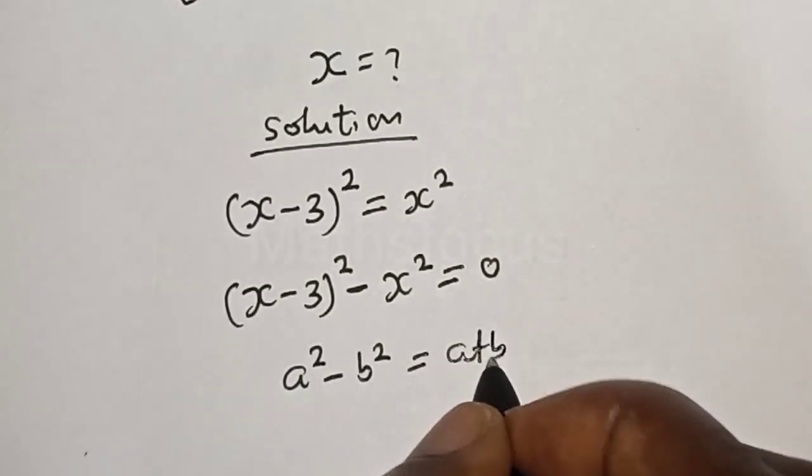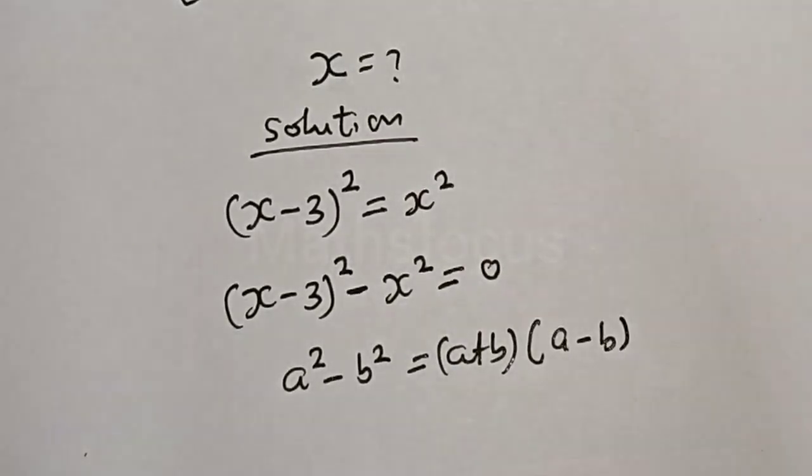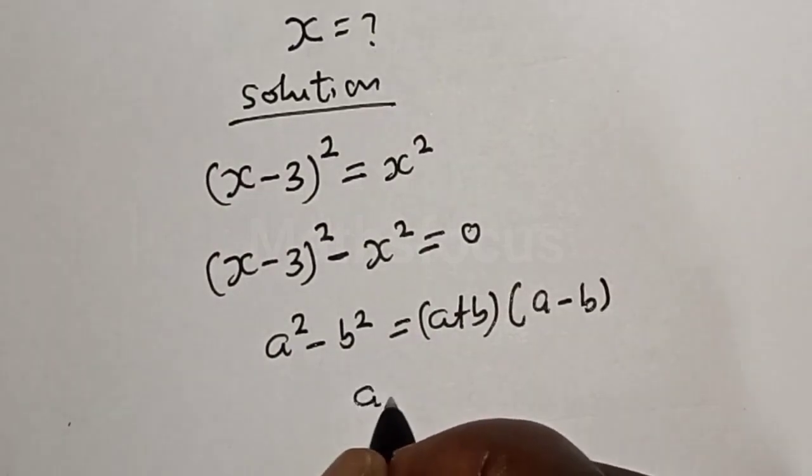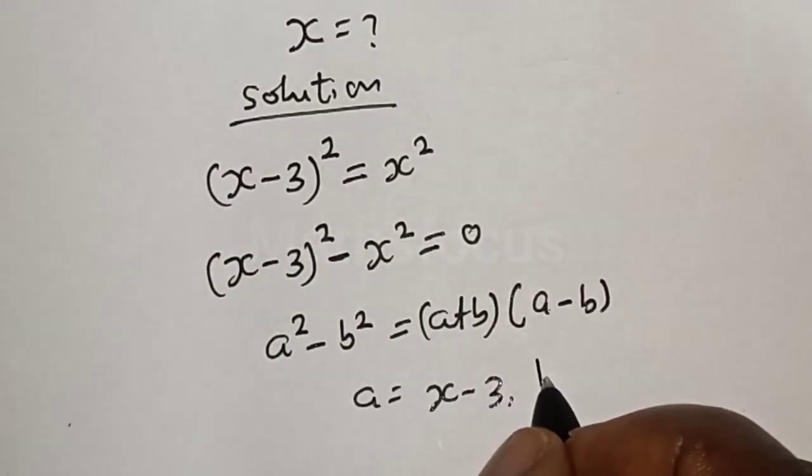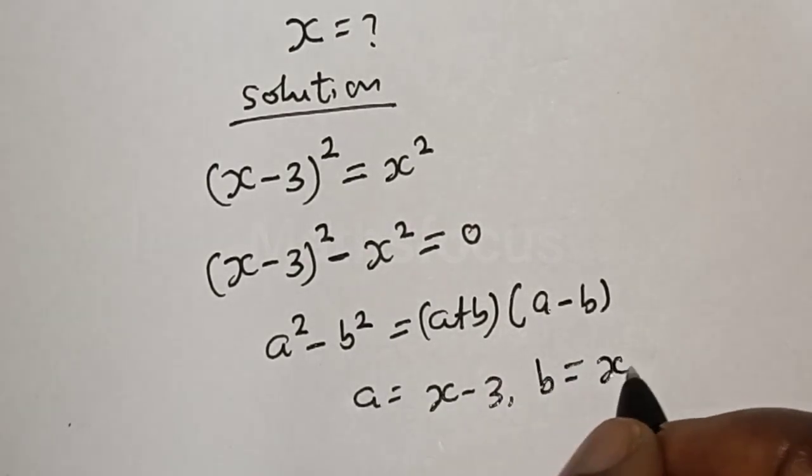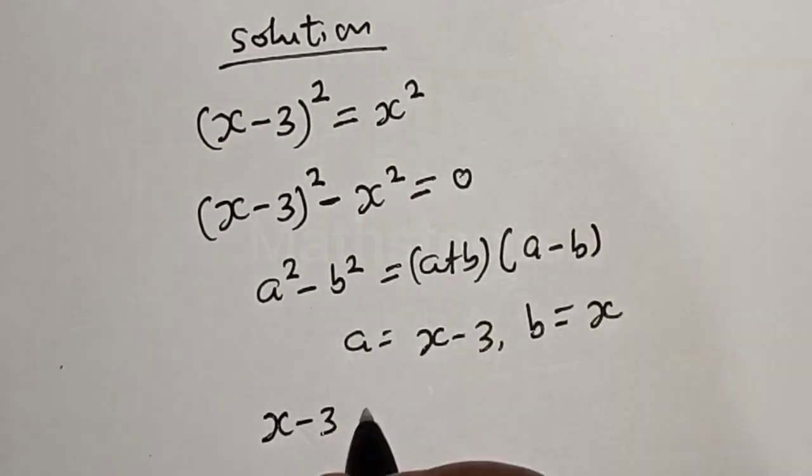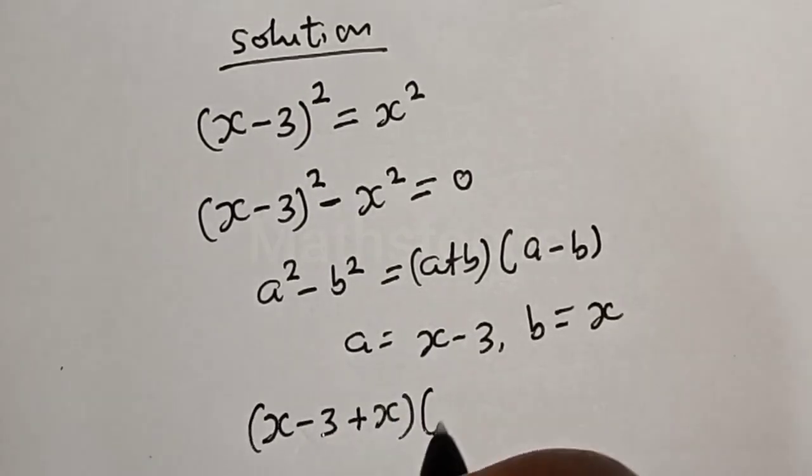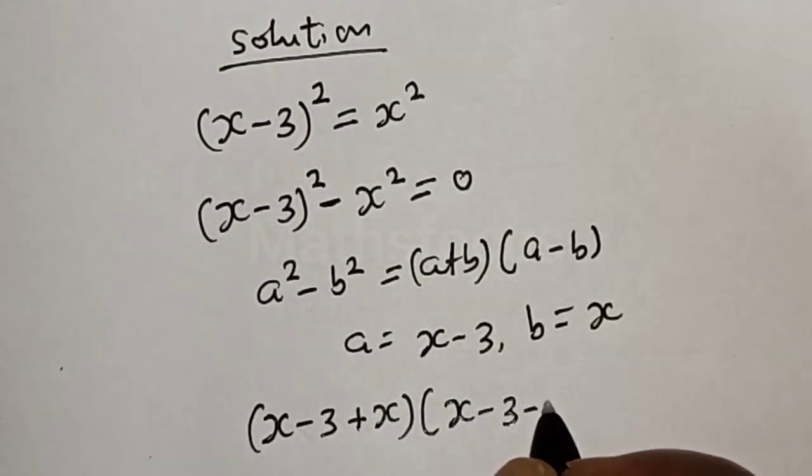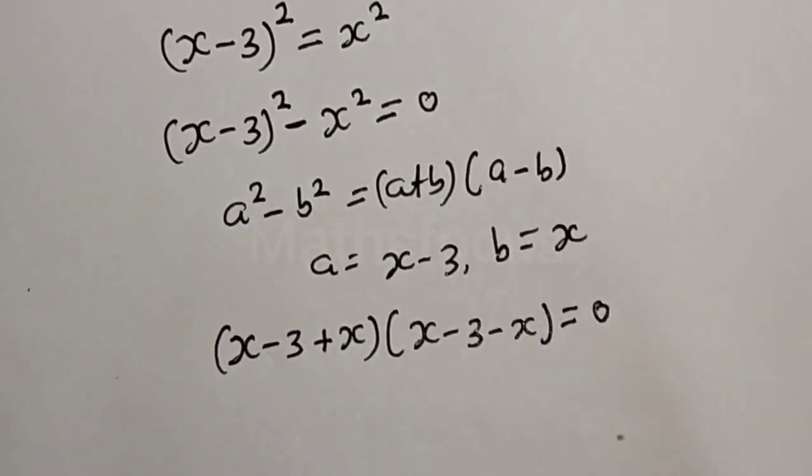So a is equal to x minus 3, b is equal to x. This is x minus 3 plus x multiplied by x minus 3 minus x is equal to zero.